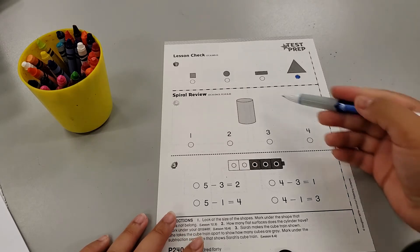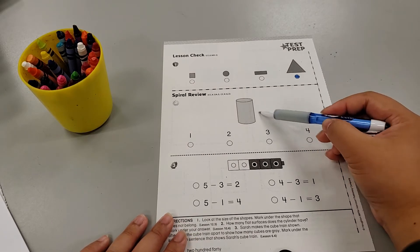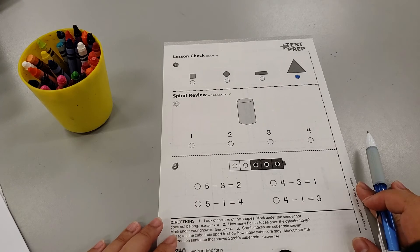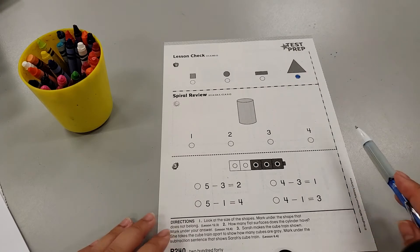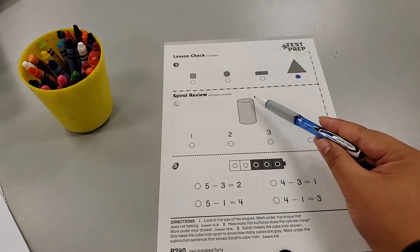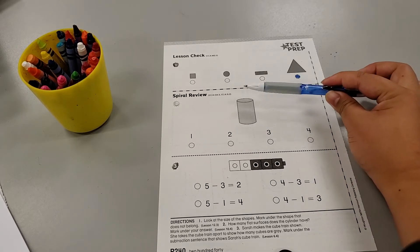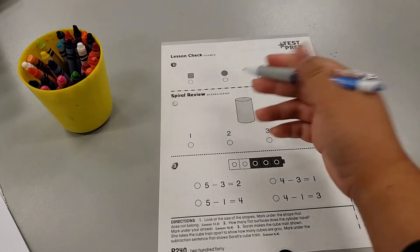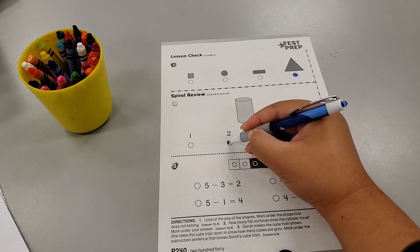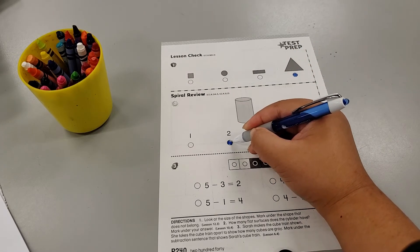We have a 3D shape here. Does anyone remember what it was called? The cylinder. How many flat surfaces does a cylinder have? The answer is 2.